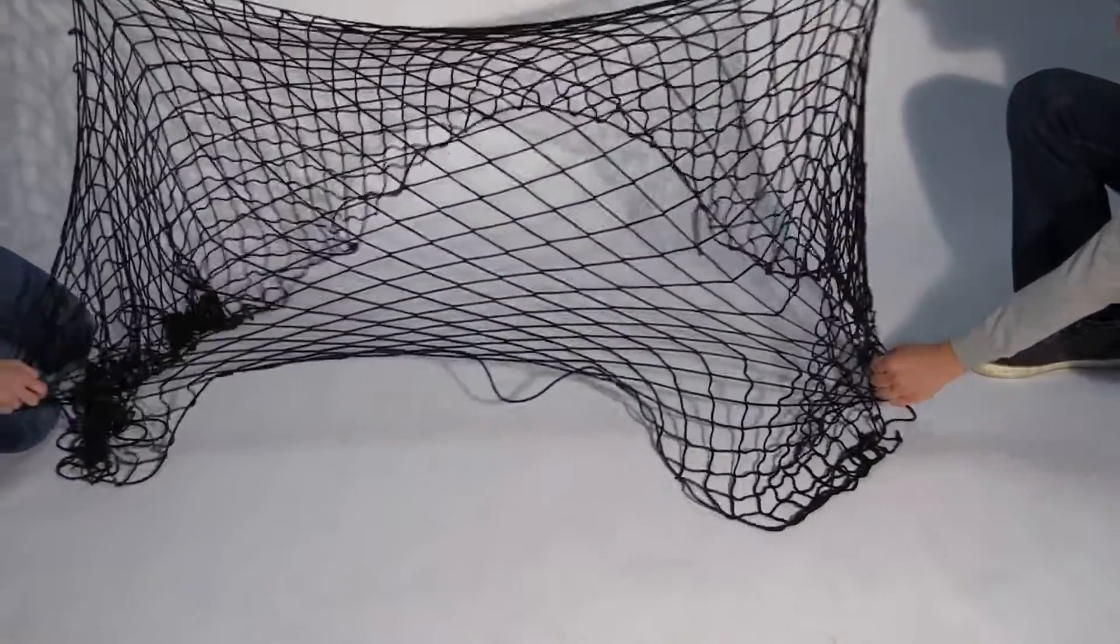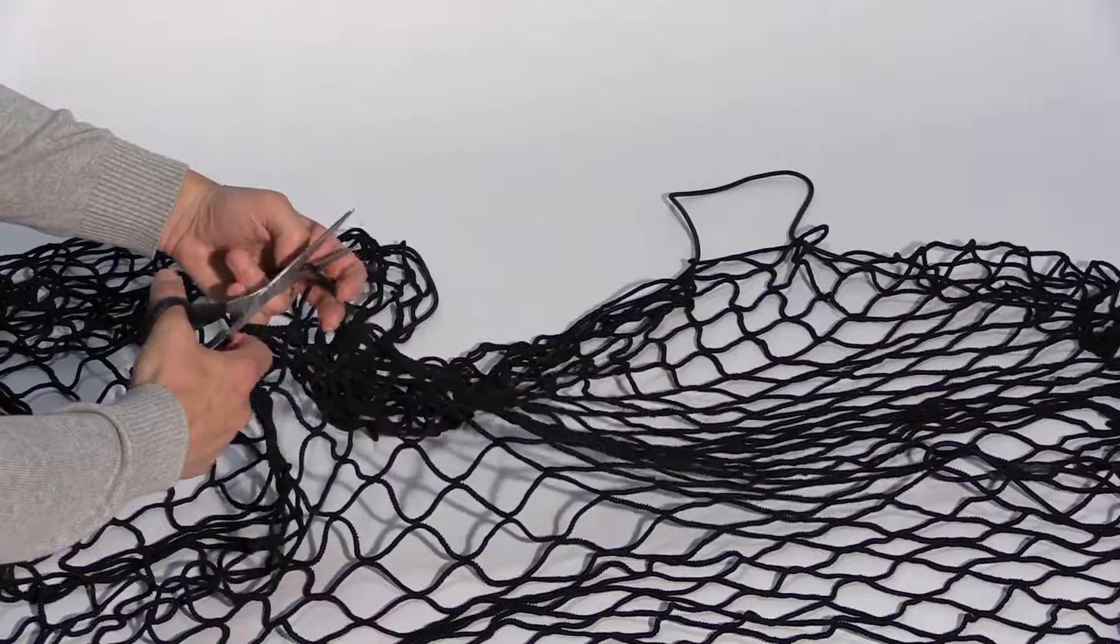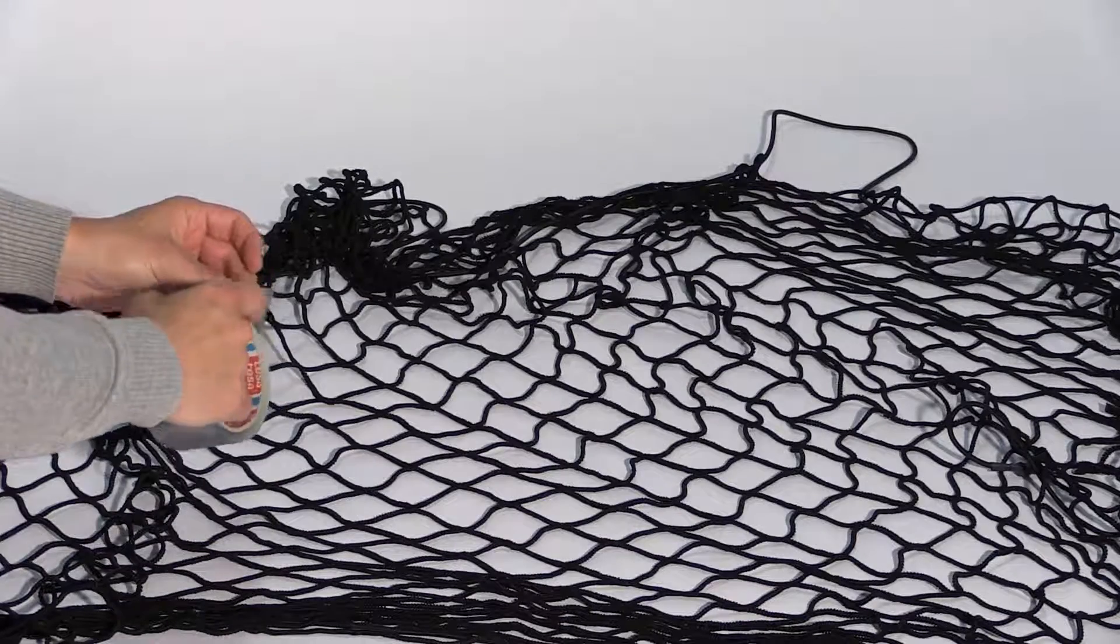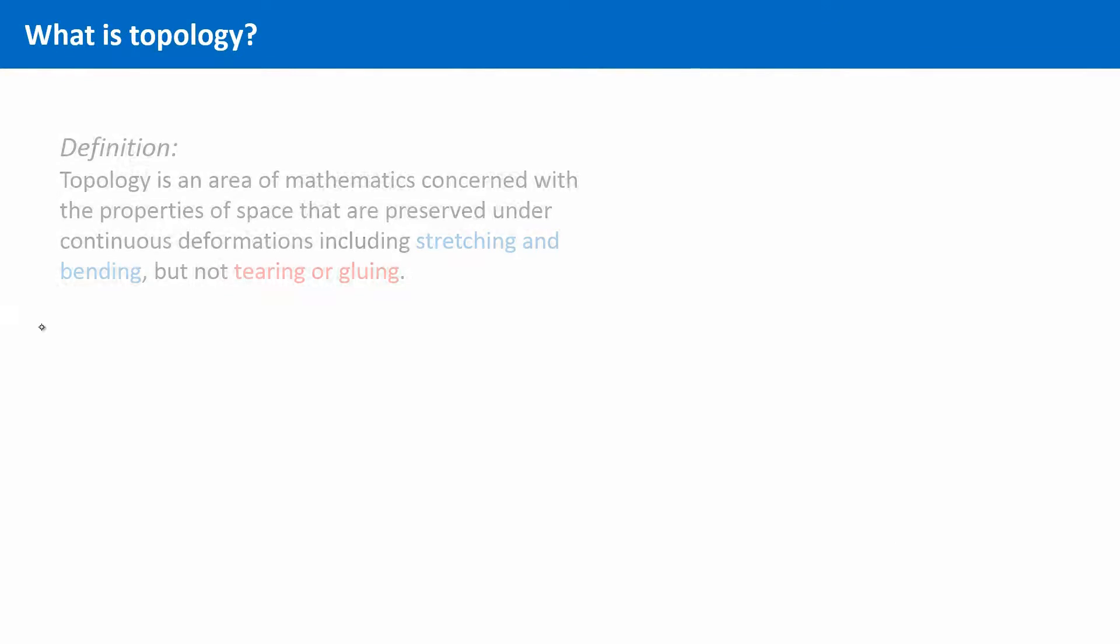From a topological point of view, the net remains the same. But what is forbidden is to cut loose any of these nodes or glue them together or anything like that, because this would then change the connectivity of the system.